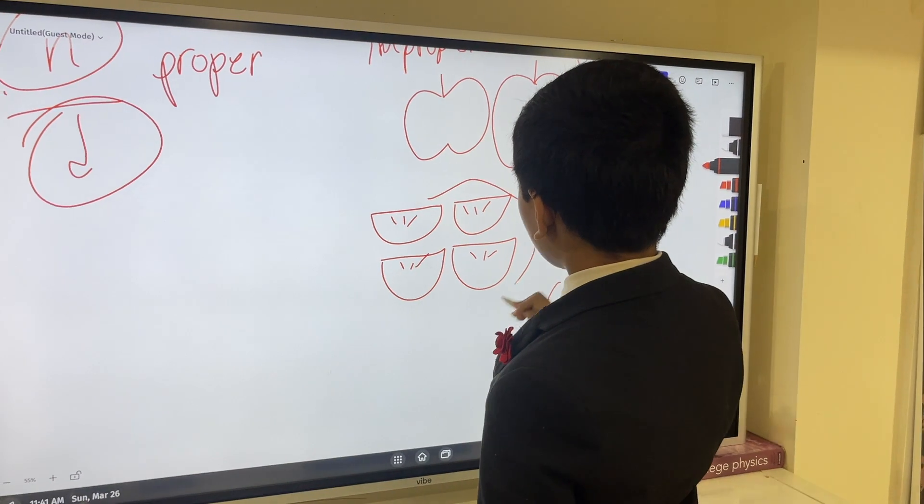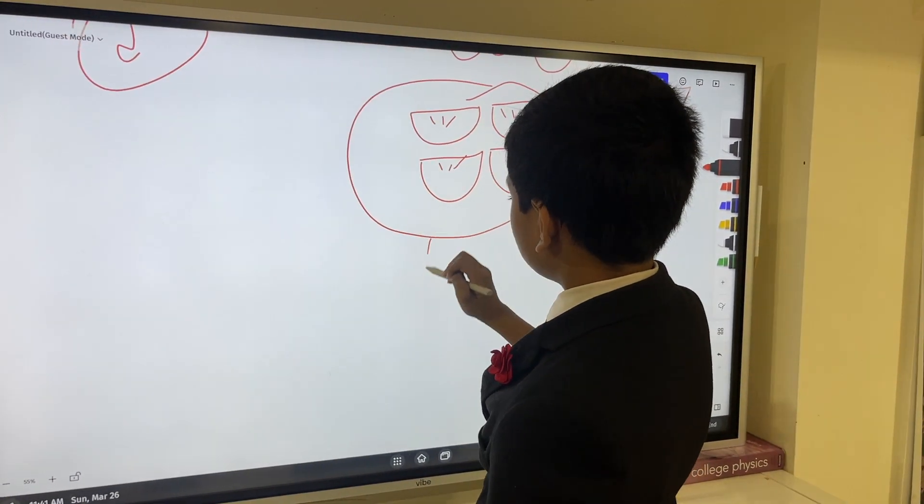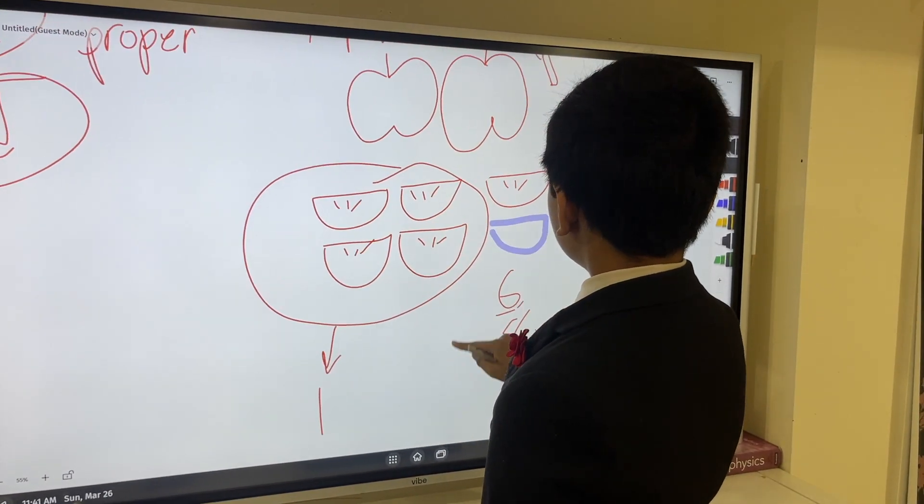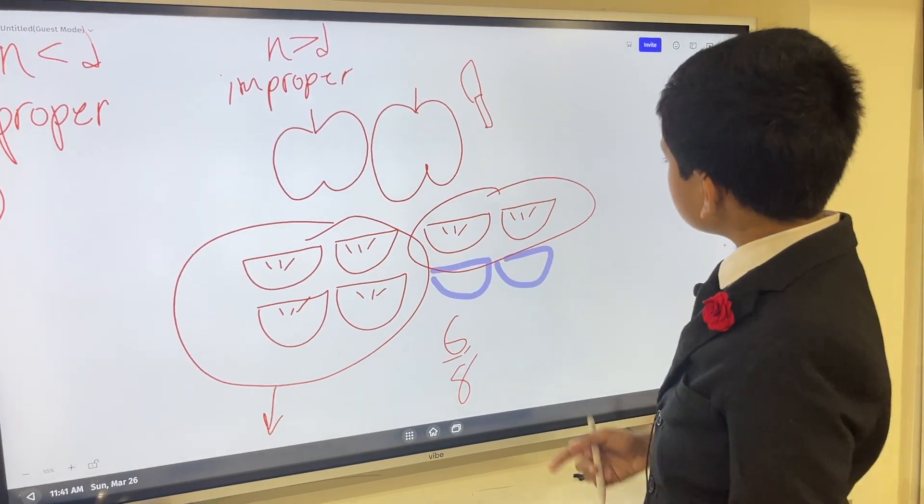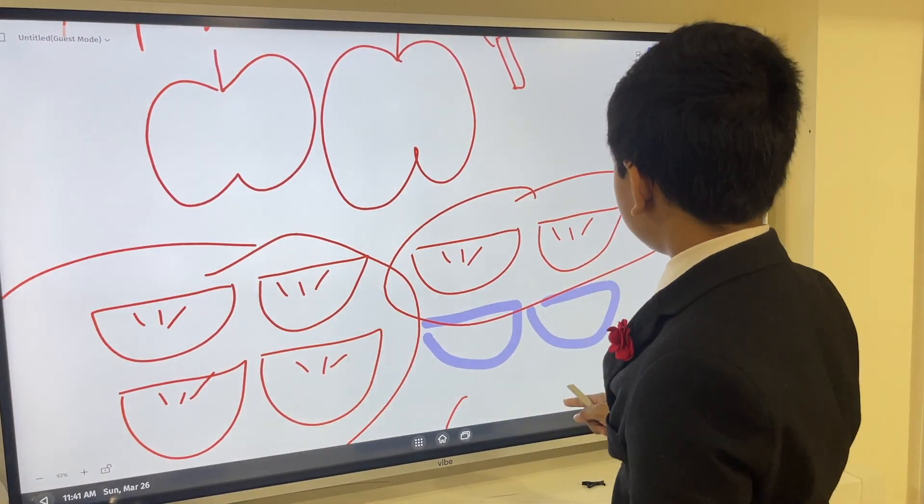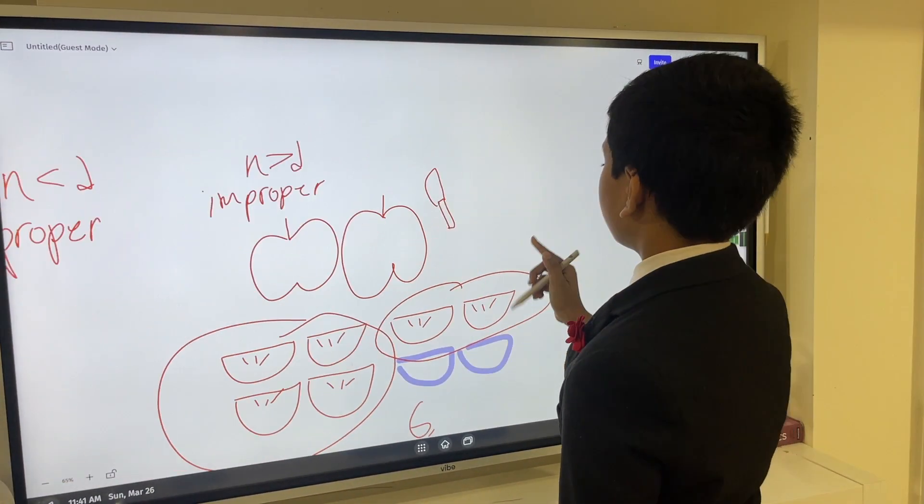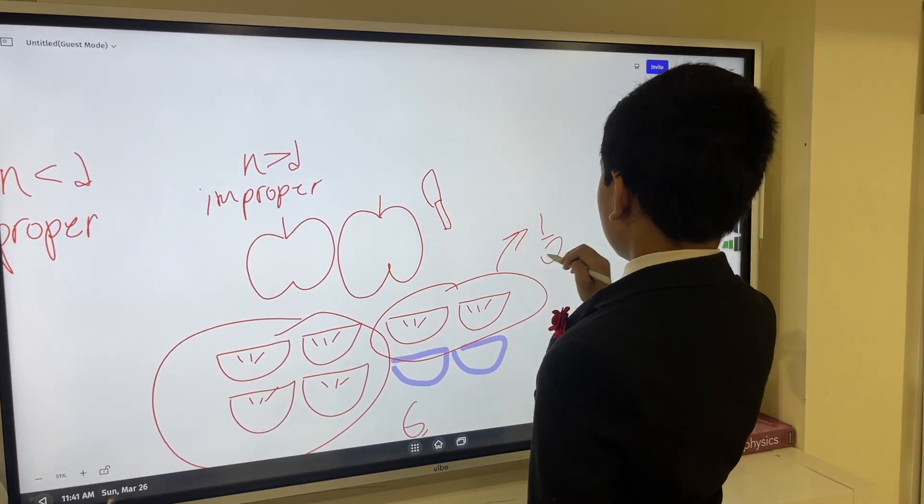Well, we know four slices make one apple, so that's one. And then, what about these kiddos? Well, this is two slices out of four, or half of an apple. So this is half an apple.